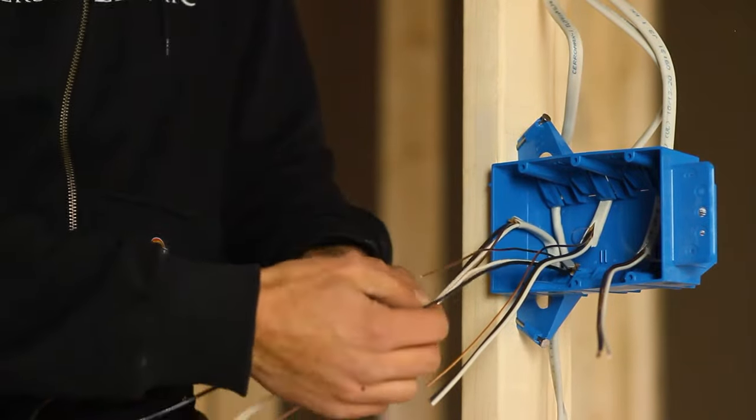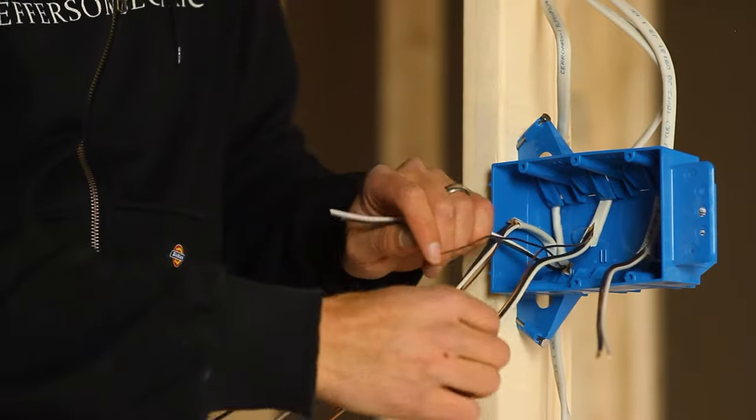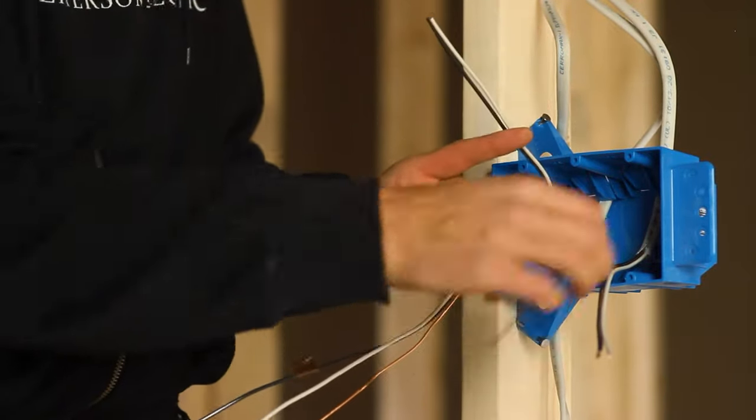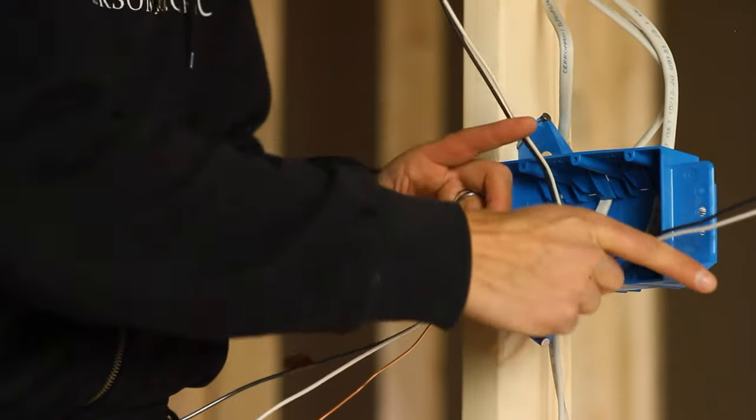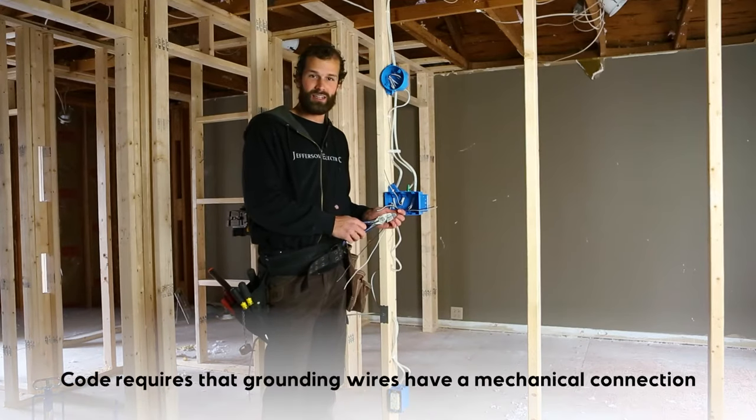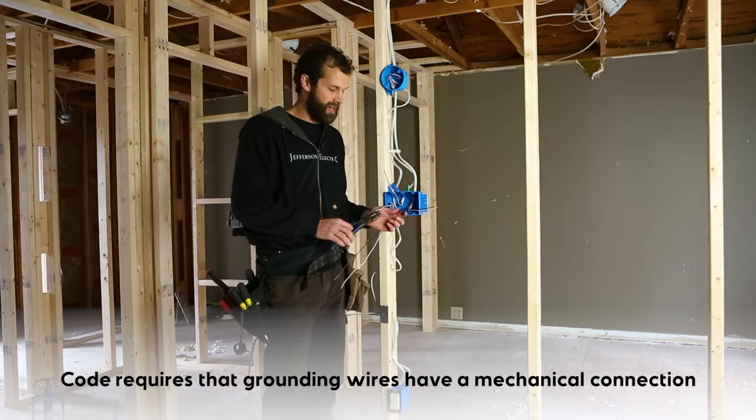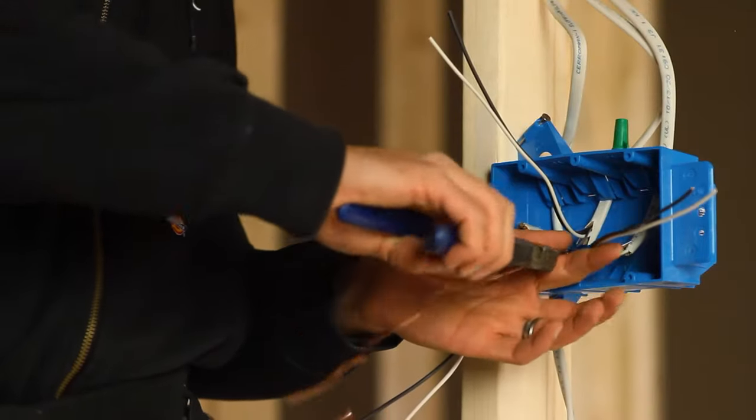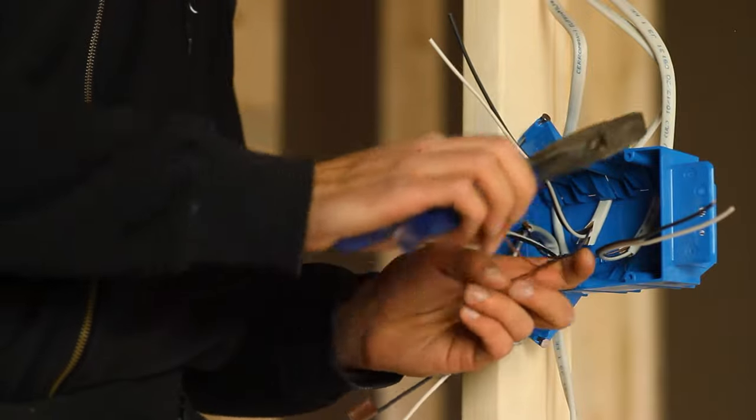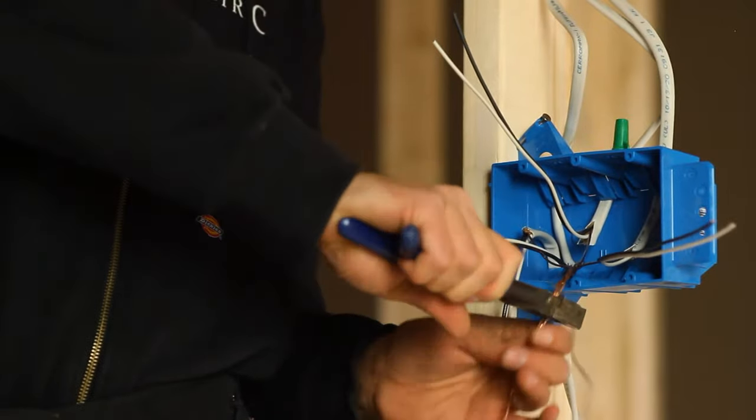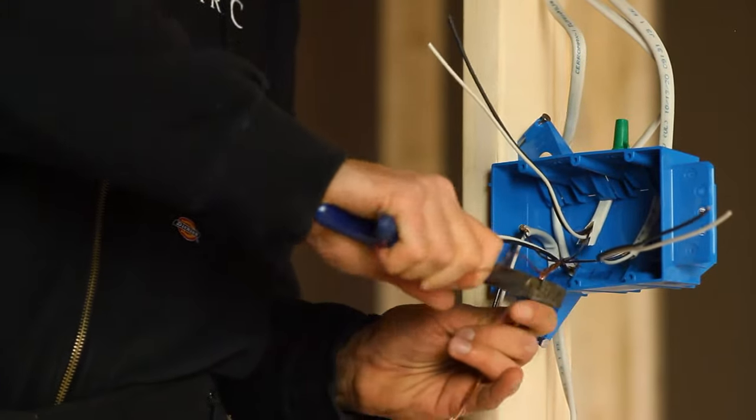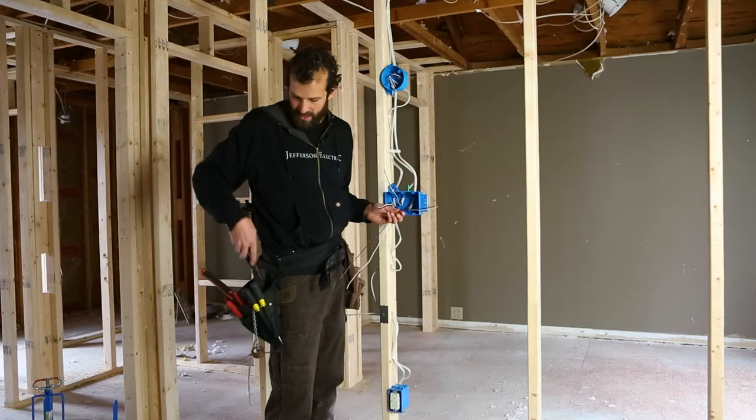Now I'm going to take all of my grounds and I'm going to route them to a central location. The code does require that grounding conductors have a mechanical connection. To do this easily, I've taken my lineman's pliers. I've provided a pre-twist to the conductors. I've cut off the excess grounding conductor because I don't want to overfill the box. Overcrowd.